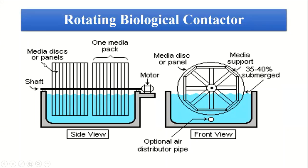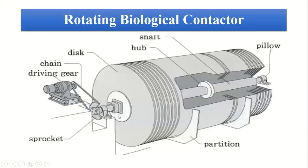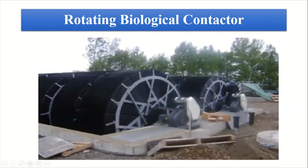This is a pictorial image of the RBC — Rotating Biological Contactor. This shows the front view and the side view. In this method you can see different units, for example the chain driver gear, sprocket, disc, hub, and partition. This is the actual image of the RBC.